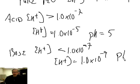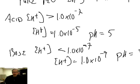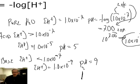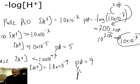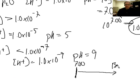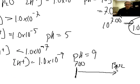The pH scale looks like this: neutral is right in the middle at 7.00. If we go higher than 7, we have a basic solution. If we go lower than 7, we have an acidic solution.